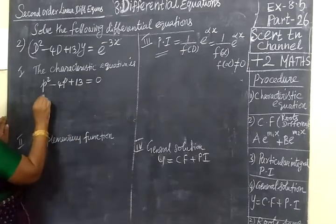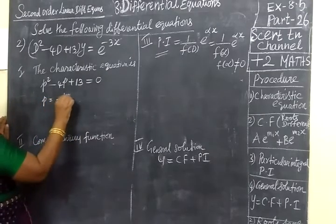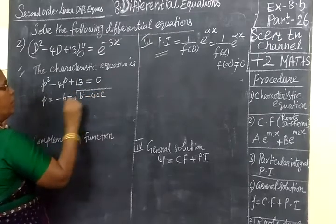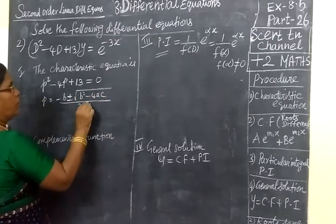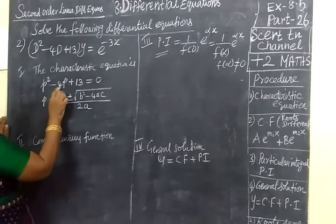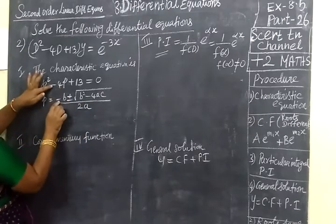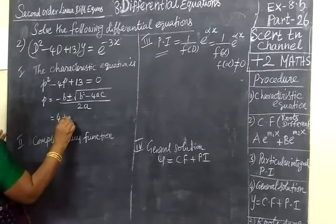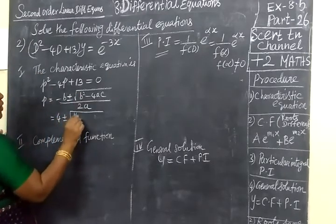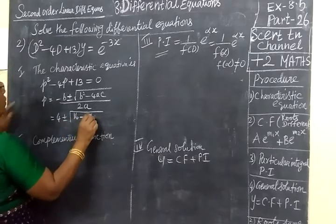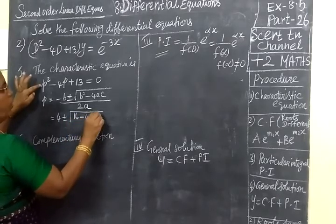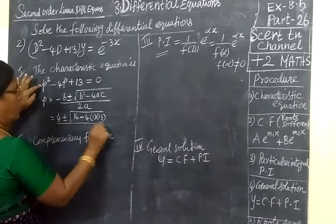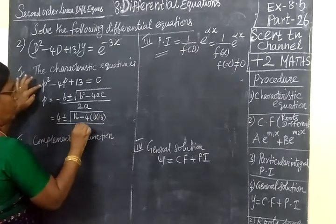We are writing p equal to minus b plus or minus root of b squared minus 4ac by 2a. This square means 4 square 16 minus 4 into a. A value 1, C value 13, all by 2a. 2 into a value 1.